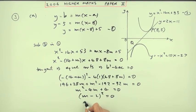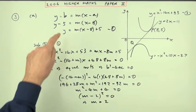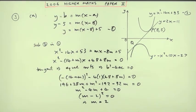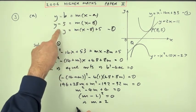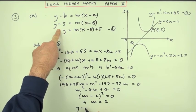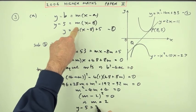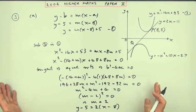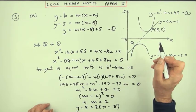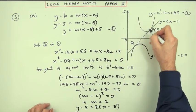That gives m minus 2 squared equals zero, so there's only one answer: the gradient equals 2. Feeding back into the line equation: y minus 5 equals 2 times x minus 8. That would be the alternative approach to part A if you didn't know how to differentiate.